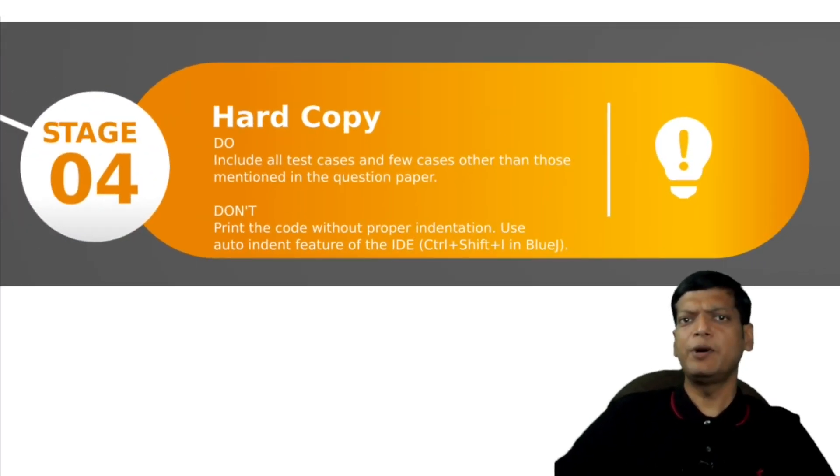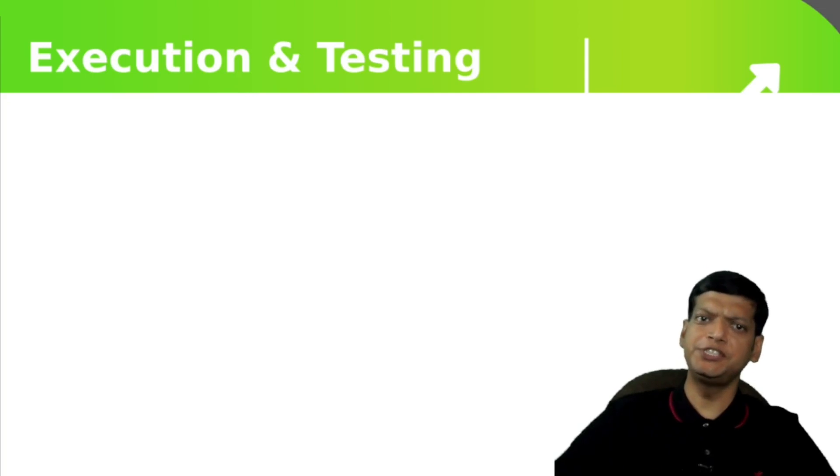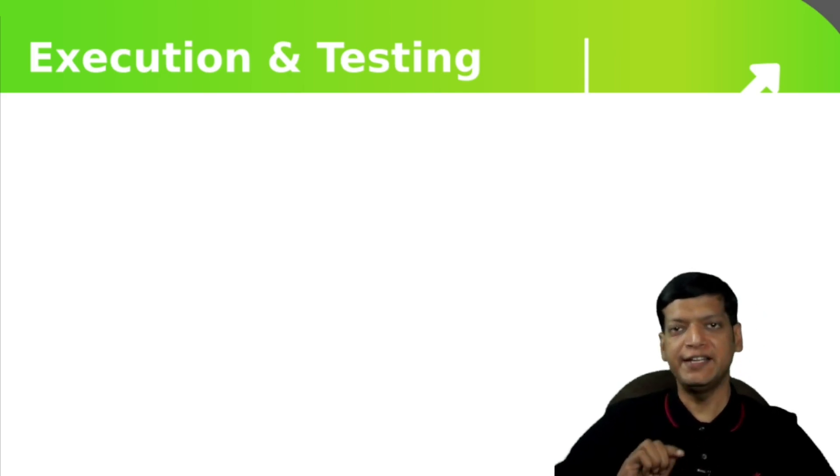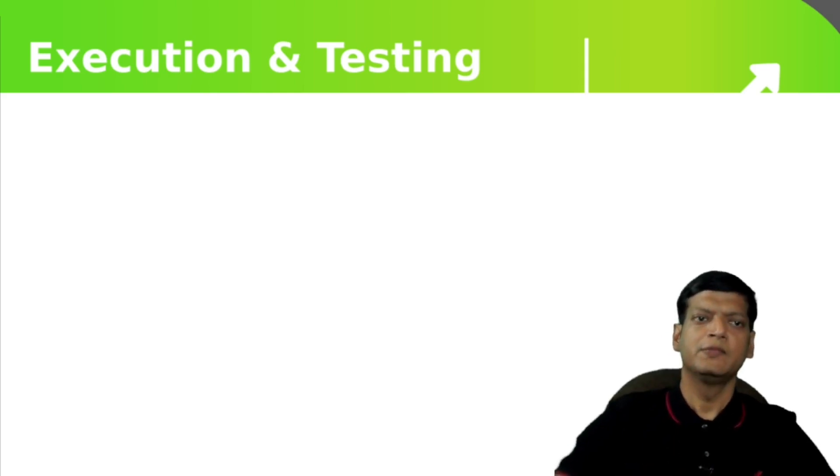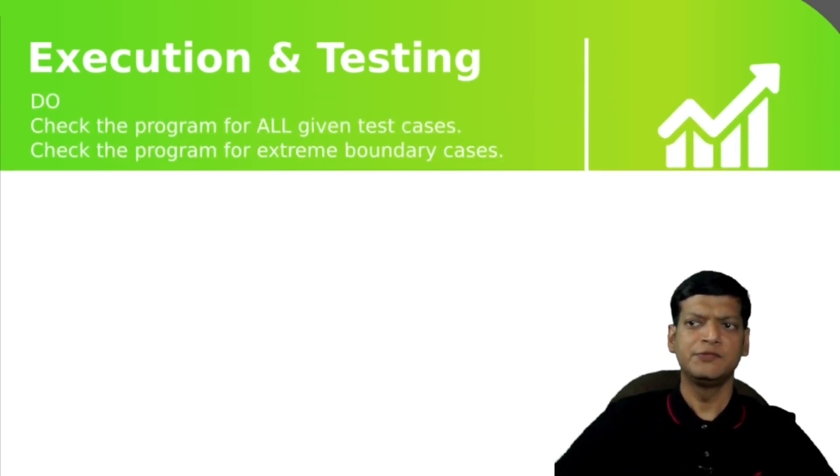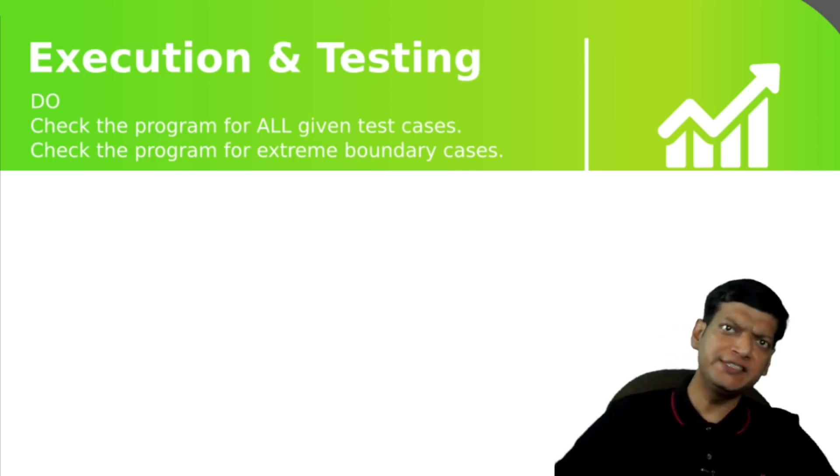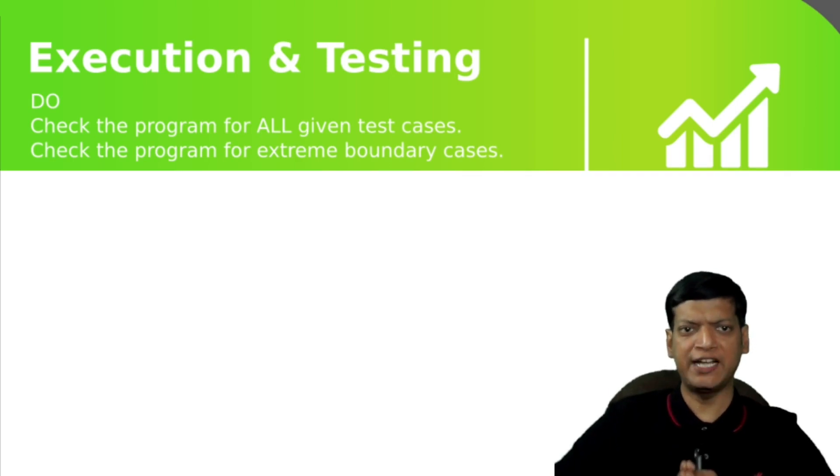Now, let us talk about the last stage, which is execution and testing. The last stage is execution and testing and it carries two marks. Please note that even though it carries only two marks, it implies that there were mistakes in other sections due to which you are not getting the correct output. The do's are check the program for all the given test cases and also check the program for the extreme boundary cases and make sure that all of these are included in the listing as well.